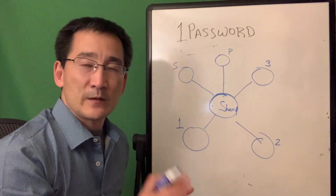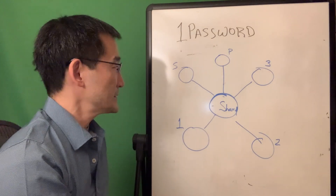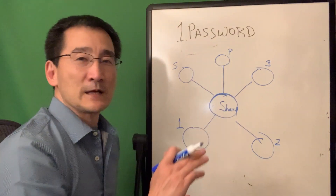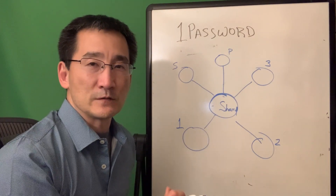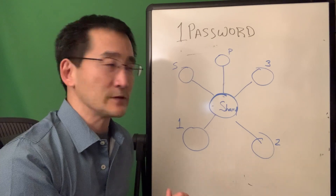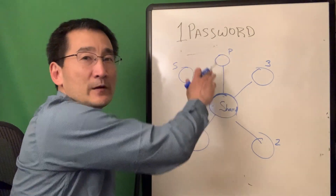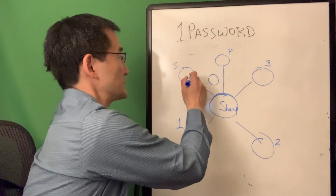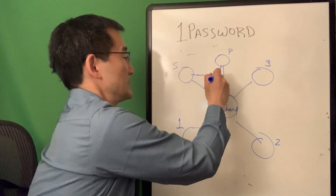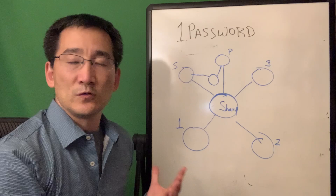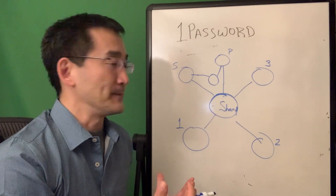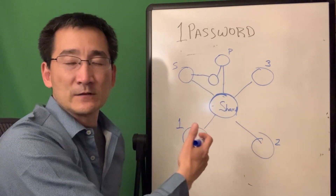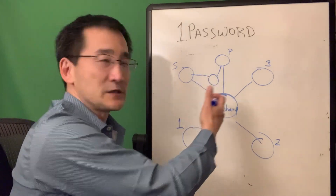Let's talk about vaults in general. You can actually set up more shared vaults and create different access characteristics. For example, if you're the primary, you could set up another shared vault and only give access to your spouse. So then just the two of you would have access to that vault, and the three children could not see it. If there were bank accounts you want to share and things like that, you could share them there.